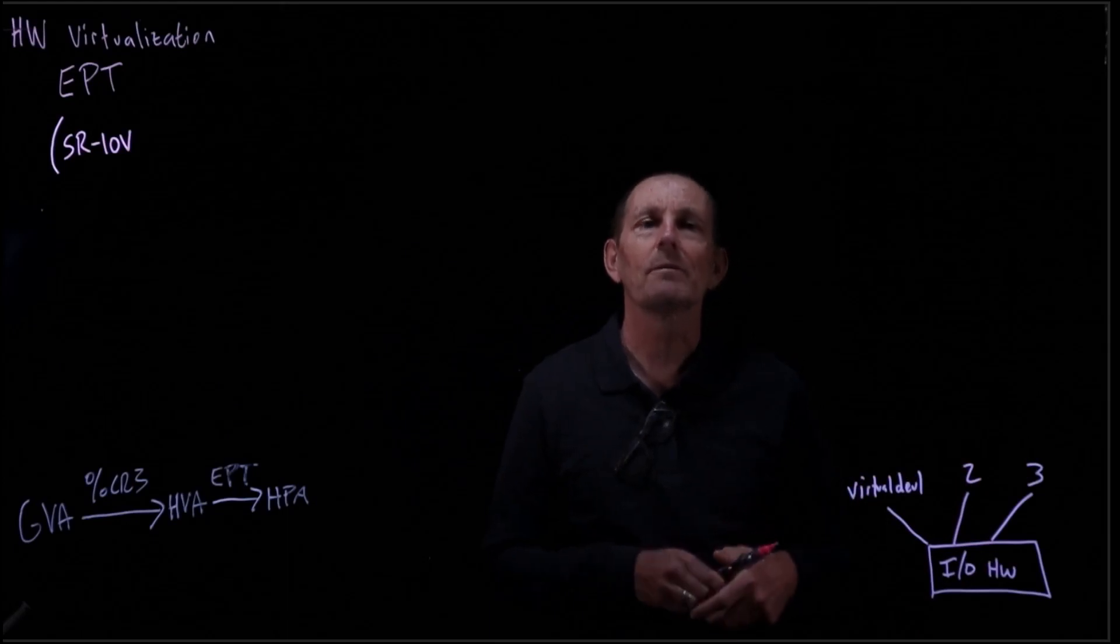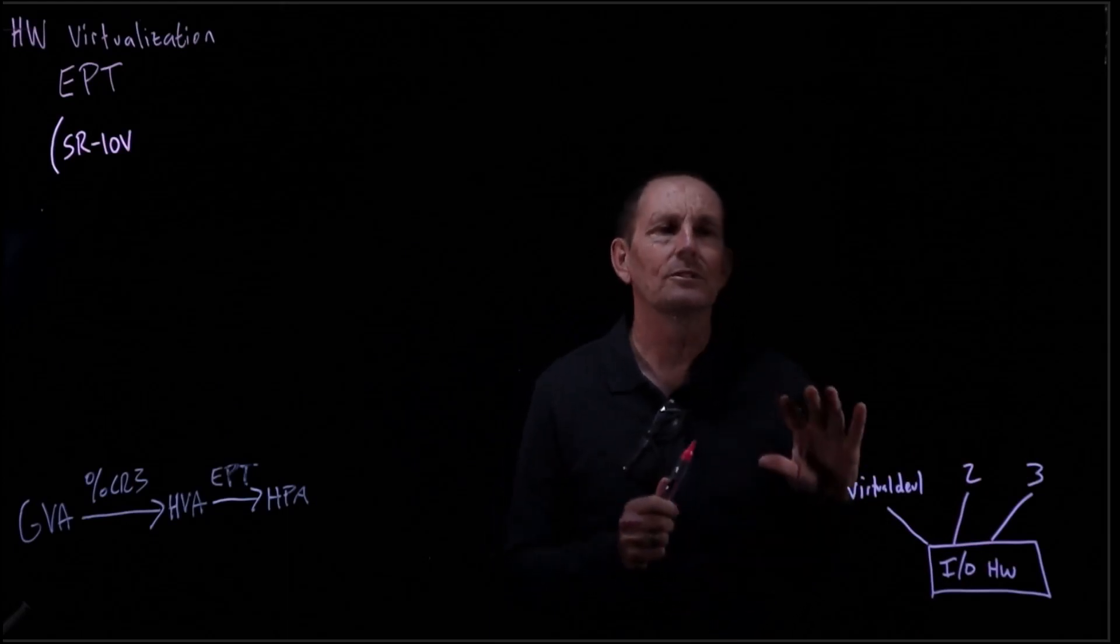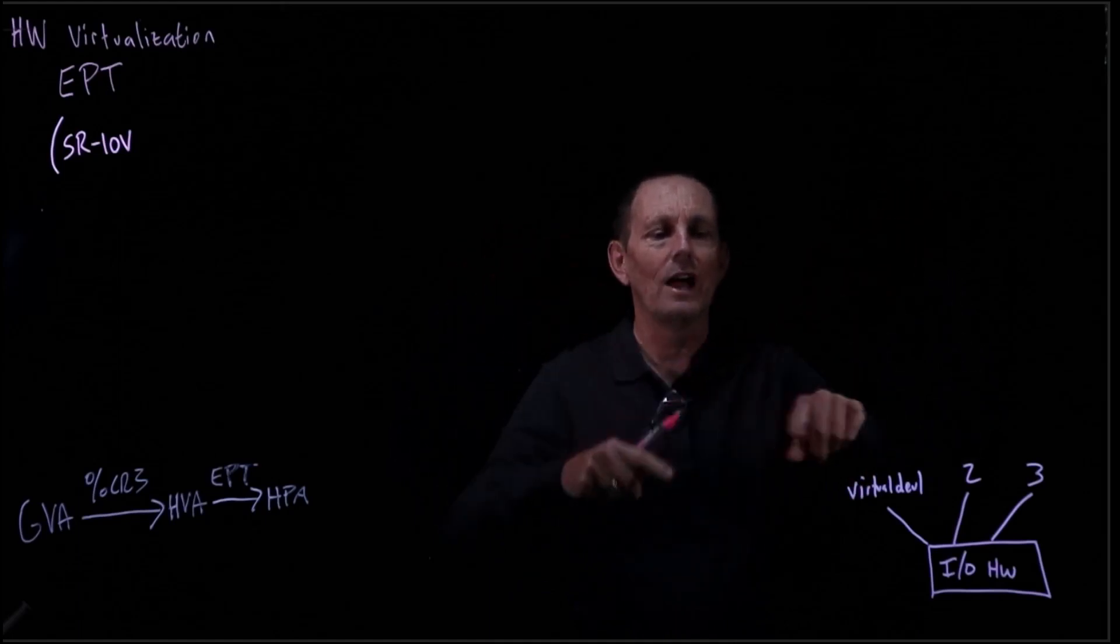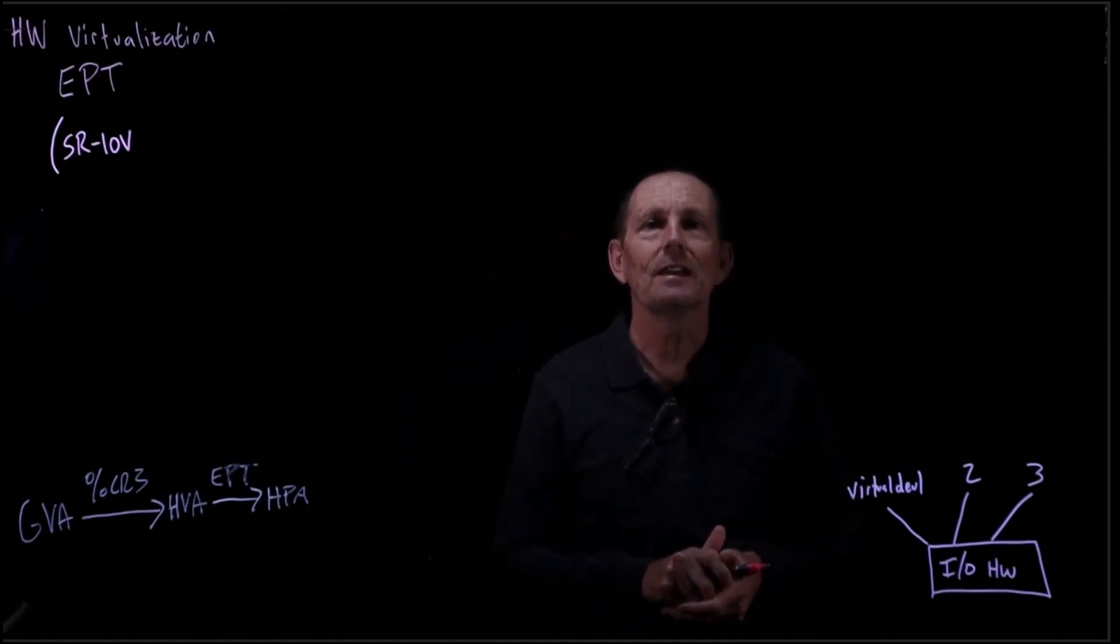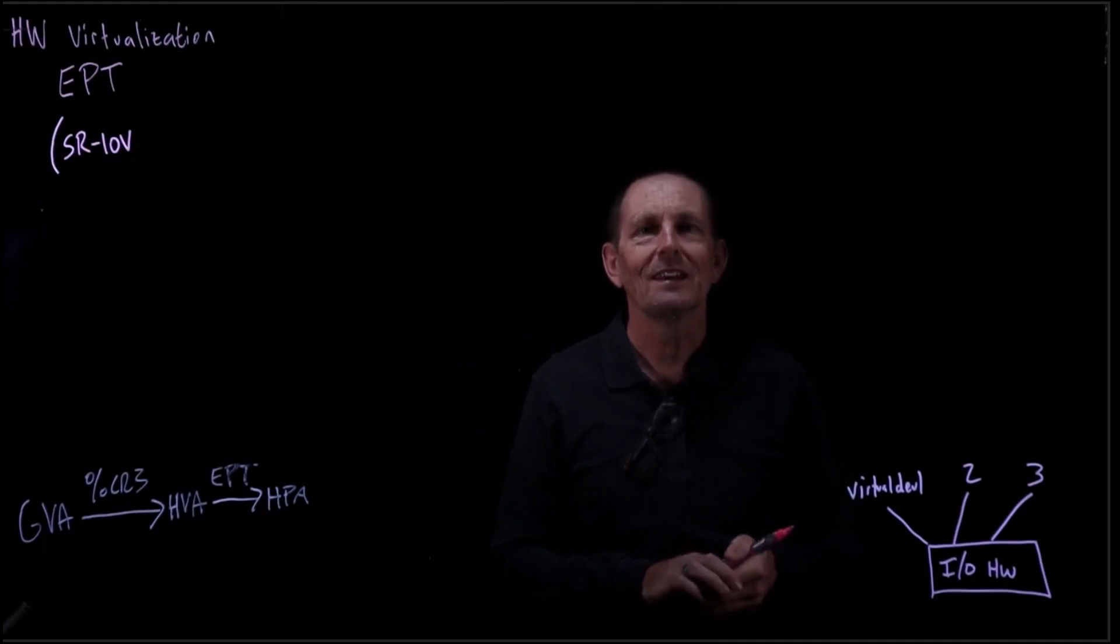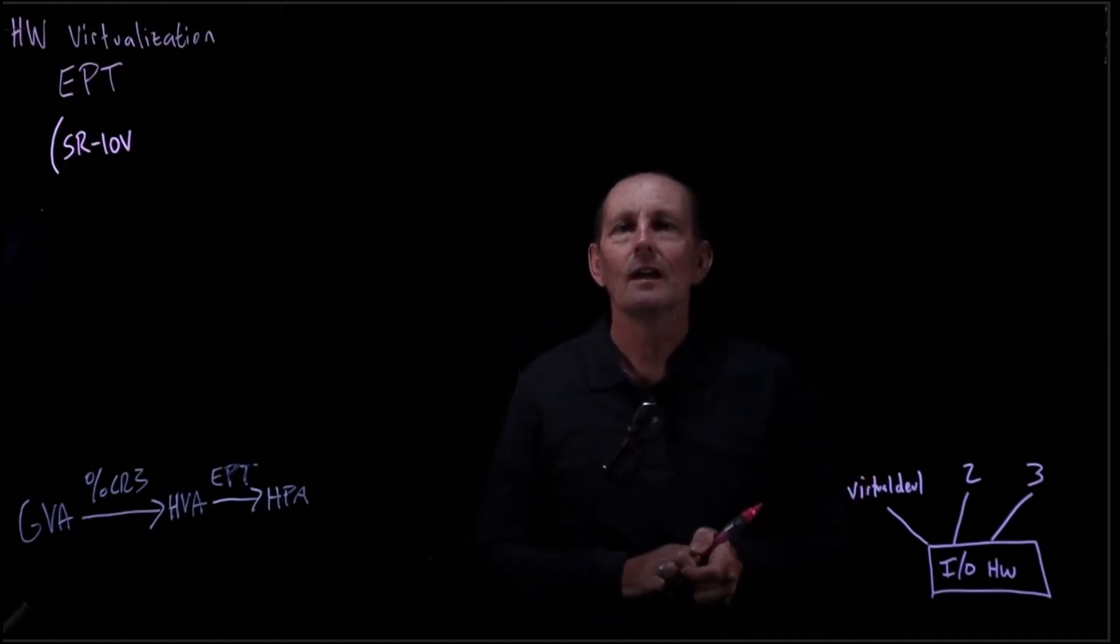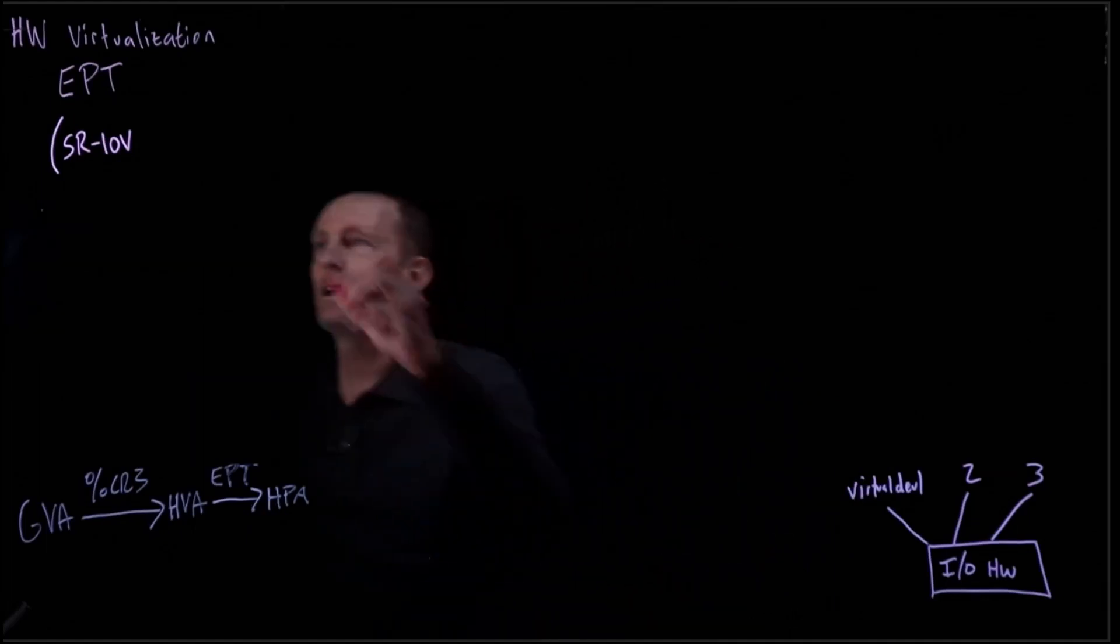If there was a single memory mapped IO space, we wouldn't be able to do this because we would have multiple OSes all accessing the same memory space and overriding one another. In addition to this, we have something called IOMMU.